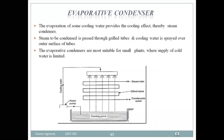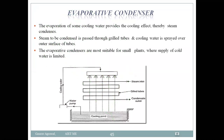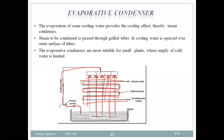Next is the evaporative condenser. In this type, a water shower spray system is used. There is a chamber through which steam tubes pass, and cooling water is sprayed over the tubes via a pump. This creates a cross-flow spray arrangement where the sprayed cooling water interacts with the steam flowing through the tubes.